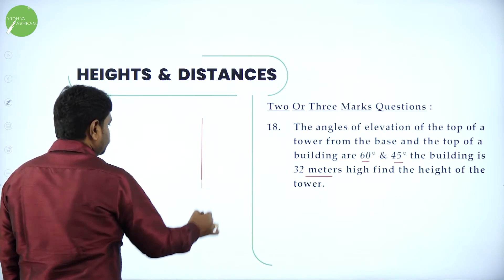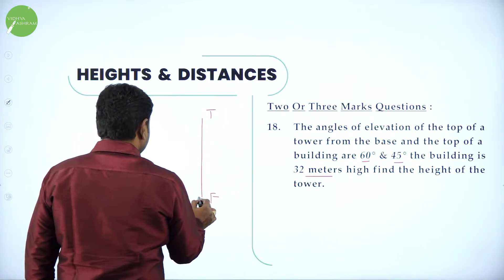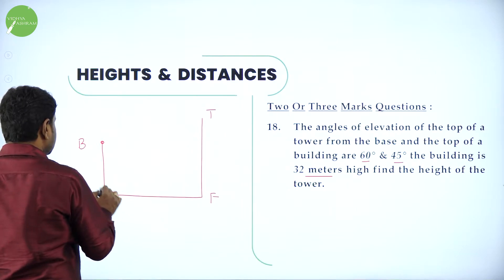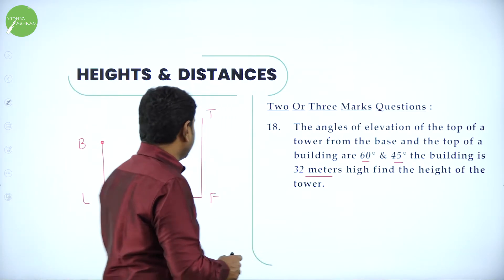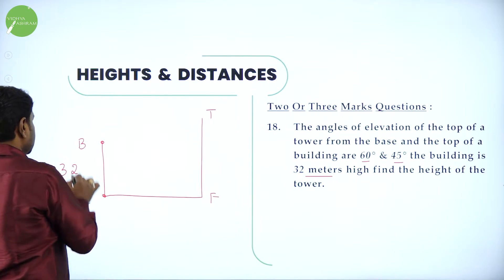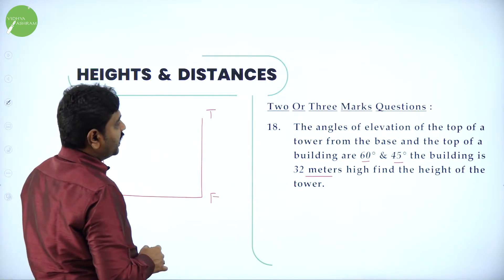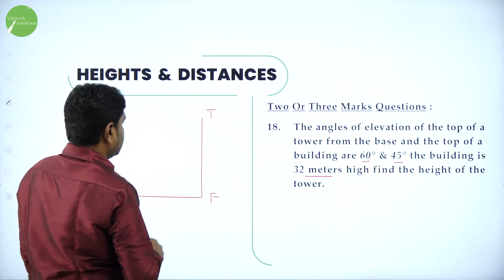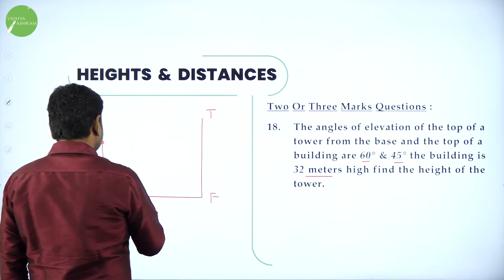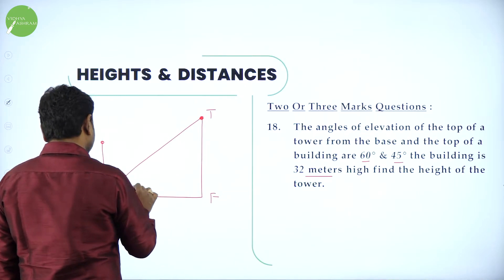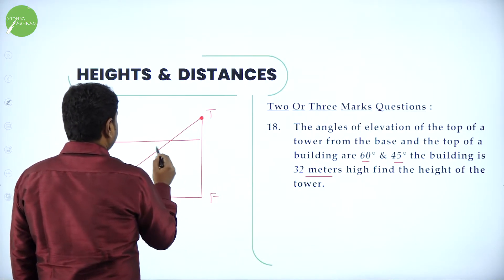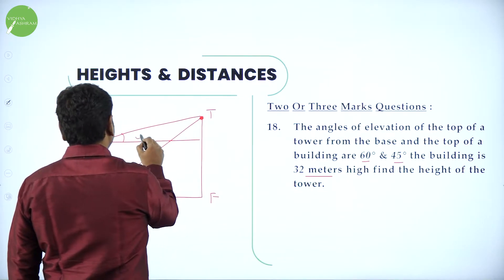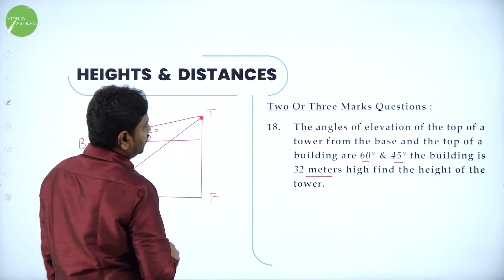Let TF be the tower and BL be the building. The height of the building BL is 32 meters. The angle of elevation of the top of the tower from the base of the building is 60 degrees, and from the top of the building the angle of elevation of the top of the tower is 45 degrees.